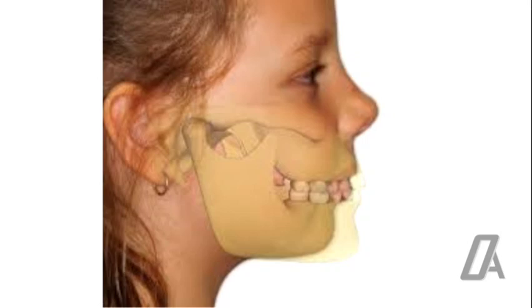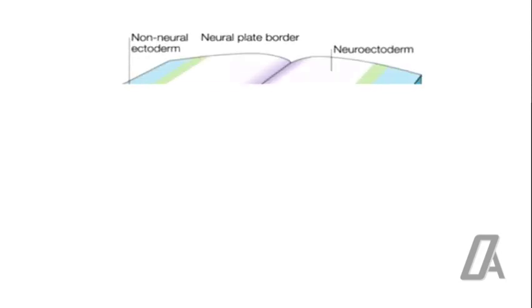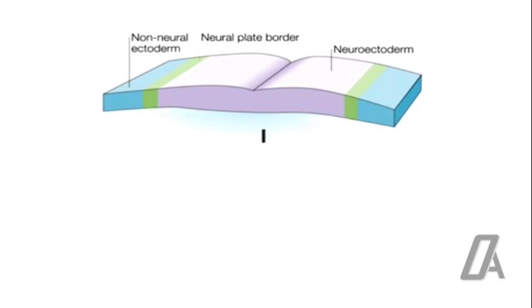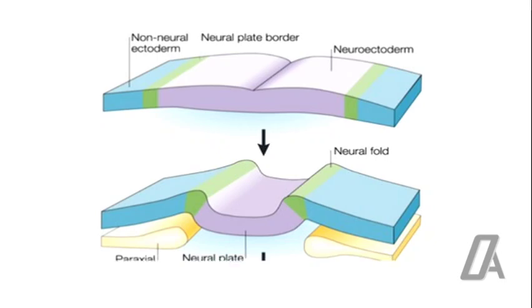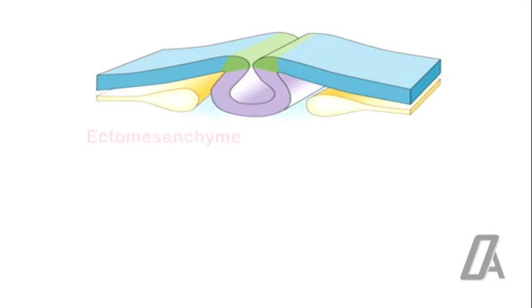The tissues of the face, both hard and soft tissues, are of neural crest cell origin. The neural crest cells are derived from the margins of the crests of the neural folds, which is the enfolding of the neural plate. The neural crest cells have great migration capacity, and though they are of ectodermal origin, they exhibit properties of mesenchymal tissues. They are thus called ectomesenchyme.